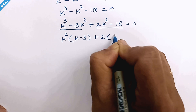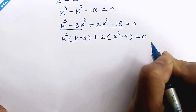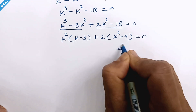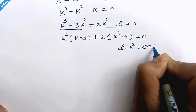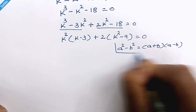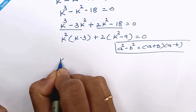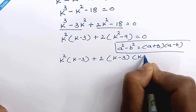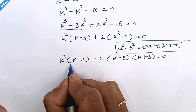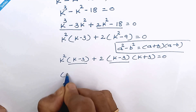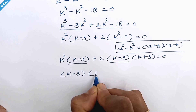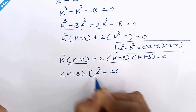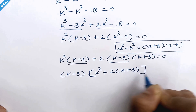So it will be 2 times k square minus 9 is equal to 0. Now 9 is 3 square, so k square minus 9 is a difference of squares identity: a square minus b square equals a plus b times a minus b. So we can write plus 2 times k minus 3 times k plus 3 is equal to 0. Now we can factor out k minus 3, giving k minus 3 times k square plus 2 times k plus 3 is equal to 0.